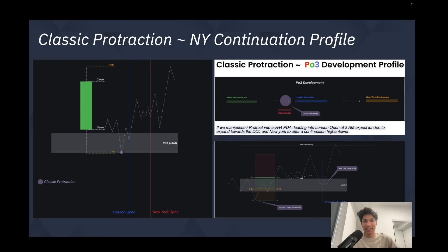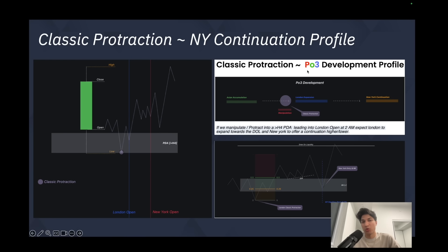Classic protraction, also known as a classic buy or sell day, is the best profile to start trading with. It offers a New York continuation profile where the low of the day is formed between the London open and the New York open. In terms of power of three, that looks like Asian accumulation, a manipulation either in the London session or right before it from 2 a.m. to 5 a.m., and then a continuation of the expansion in New York.